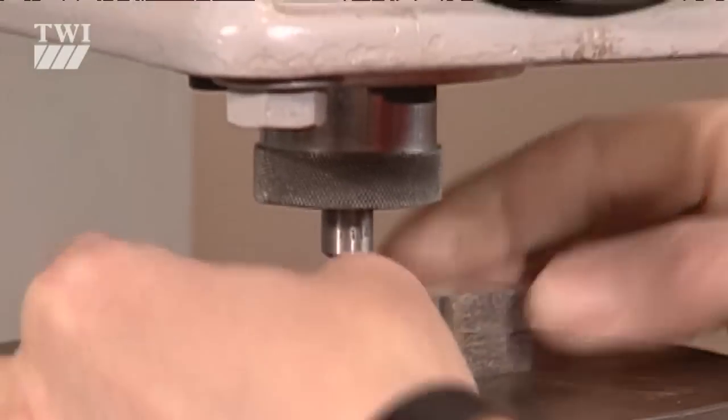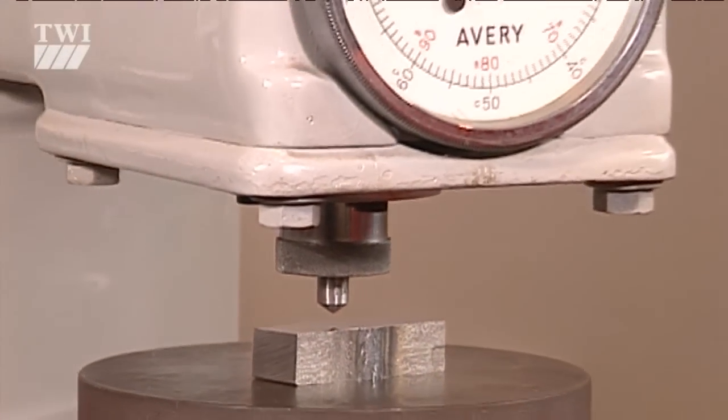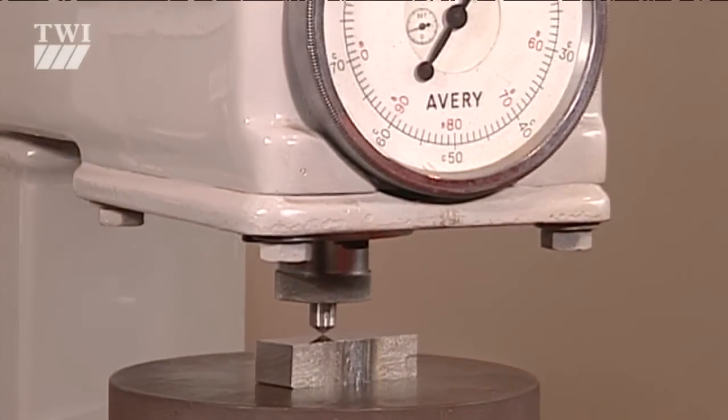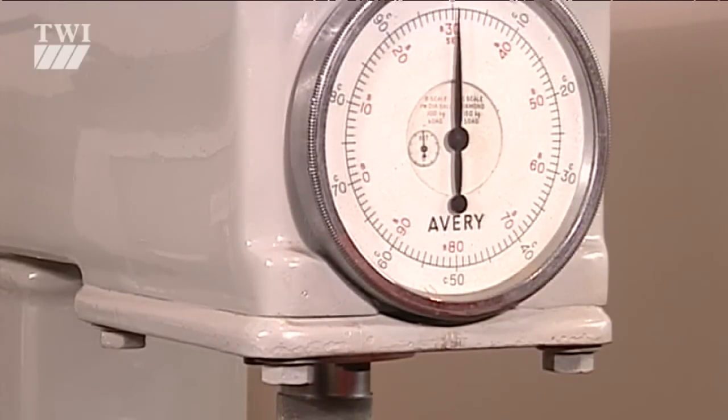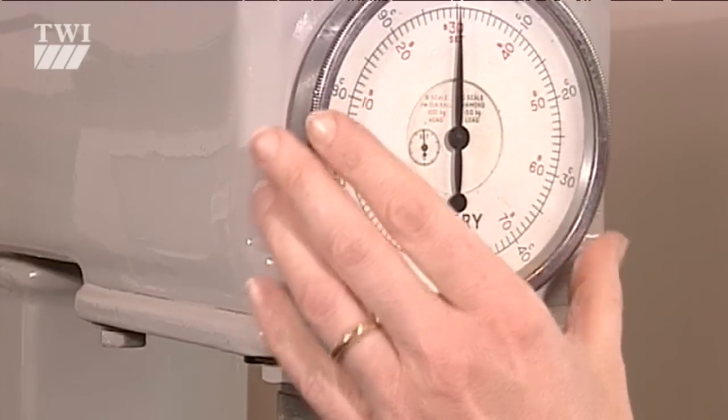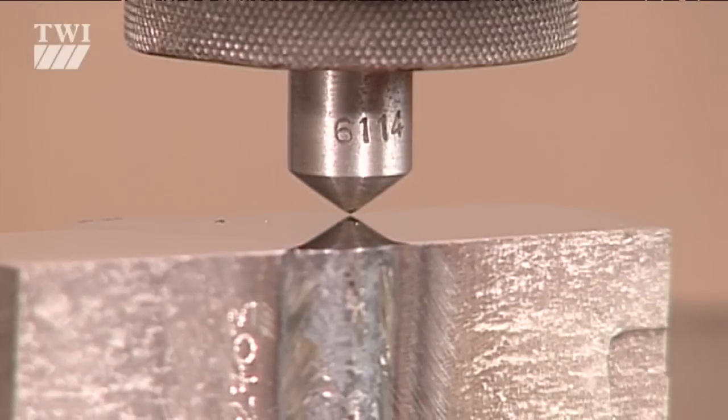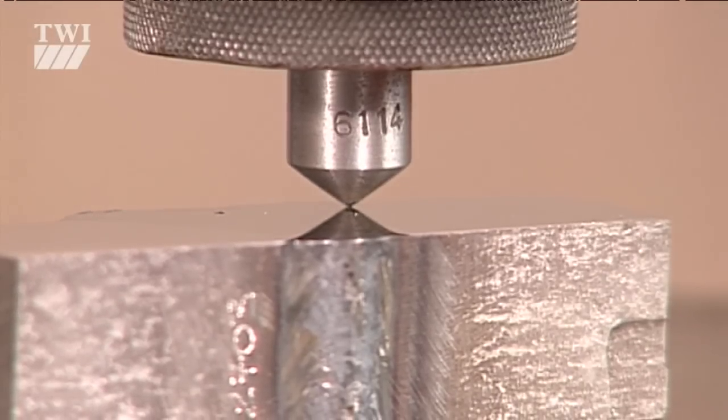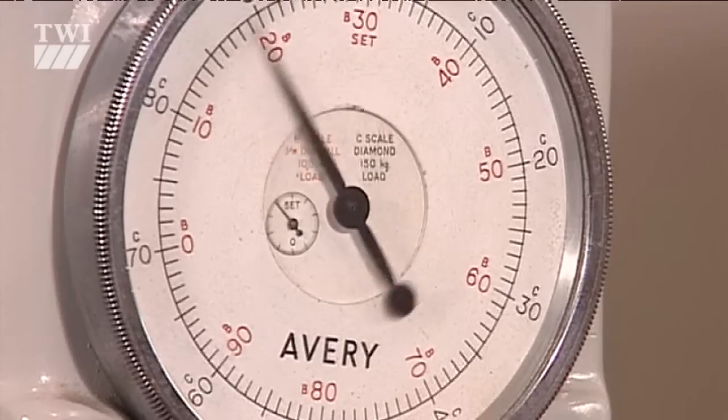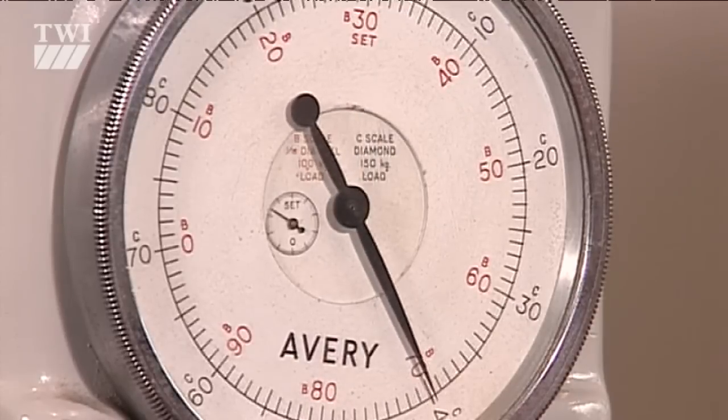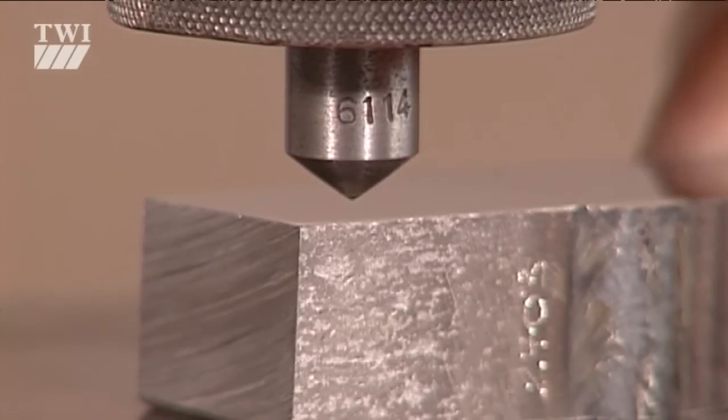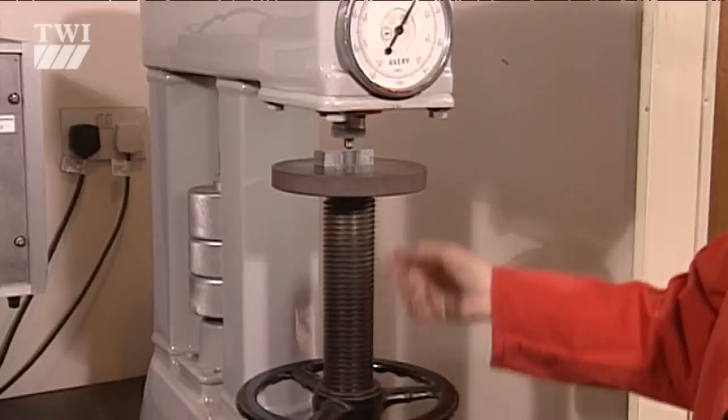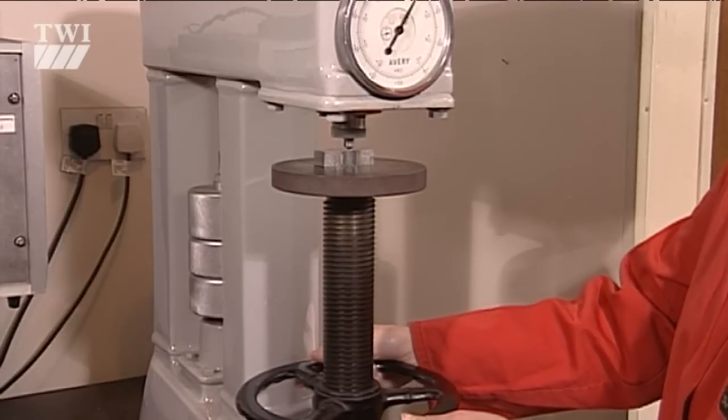The Rockwell hardness test, named after the American Stanley Pickett Rockwell, works on a similar principle, with a conical indenter, but uses two applied loads. The permanent increase in penetration depth is used to calculate the Rockwell hardness number. Different loads are used for materials with different hardnesses. The most common scales are Rockwell B and Rockwell C hardness.